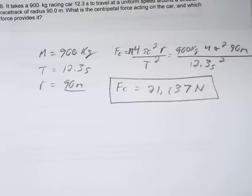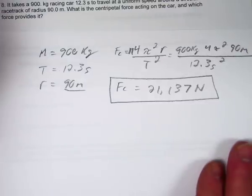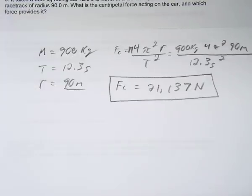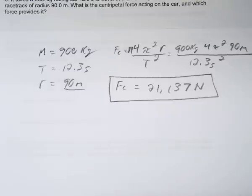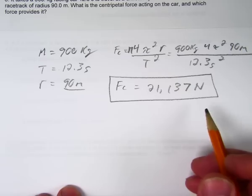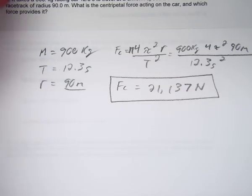It also asks which force provides that centripetal force. From the warm-up we figured this out - it's friction. That's how tires work. On an icy road when you turn the tires, the car keeps going straight because there's not enough friction to provide the centripetal force.